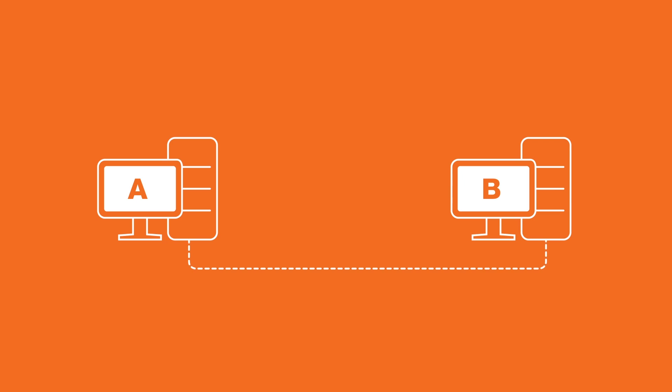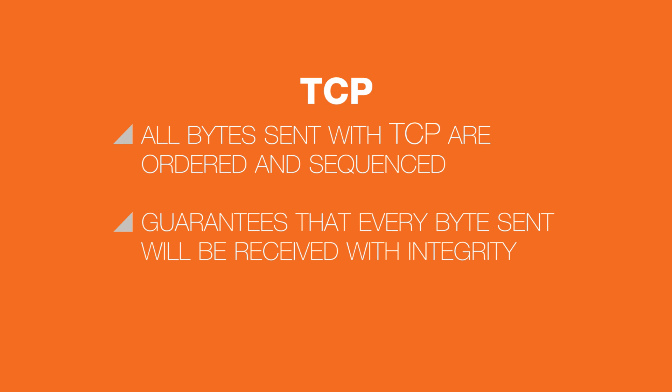TCP establishes a connection between the source and destination devices for reliable data transfer and flow control, sending data at an acceptable rate both to the source and destination. UDP is connectionless and has no flow control. All bytes sent with TCP are ordered and sequenced. TCP guarantees that every single byte sent will be received with integrity and processed in the correct order.